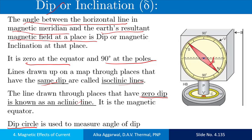At the equator, the magnetic needle is horizontal so the angle of dip is zero. At the poles, the needle is vertical so the angle of dip is 90 degrees.